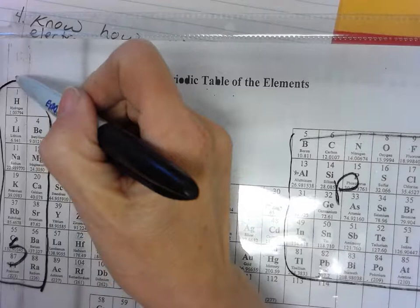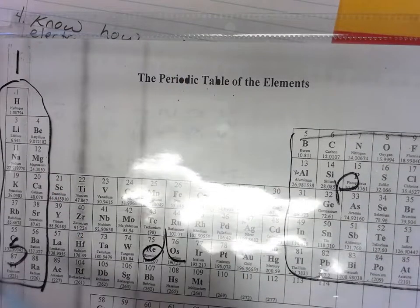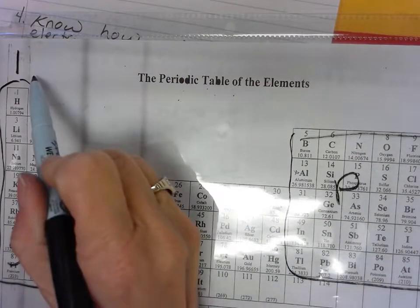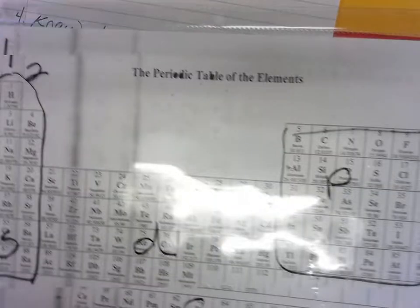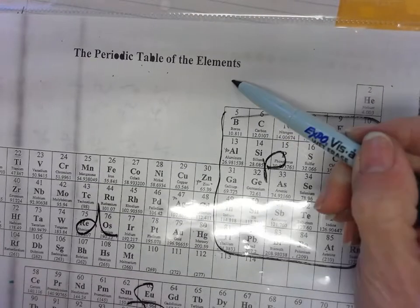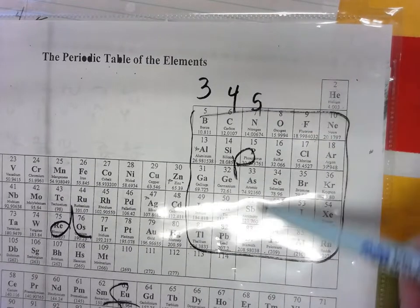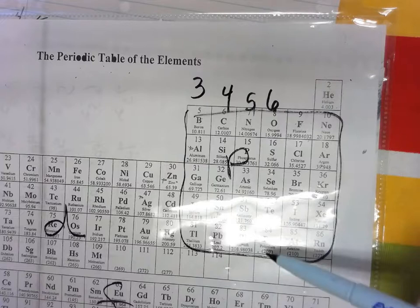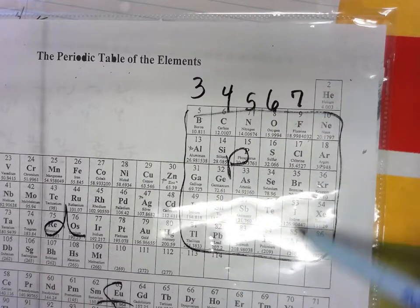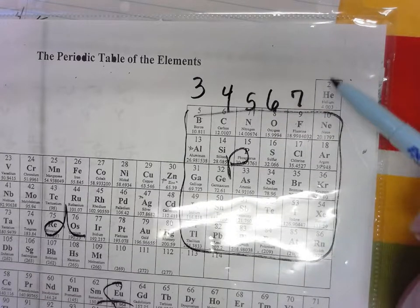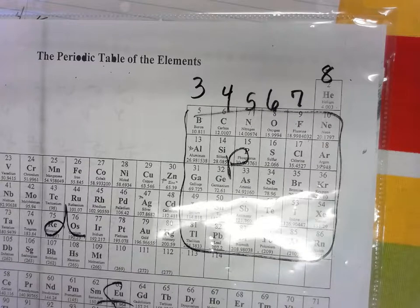Everything in this family has one valence electron. Everything in this family has two valence electrons. Everything here has four. Everything here has five valence electrons, six valence electrons, seven valence electrons, and with the exception of helium, eight valence electrons.